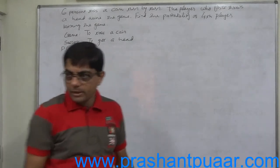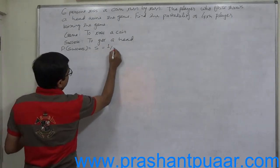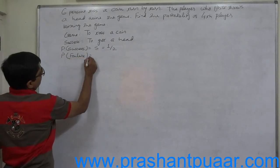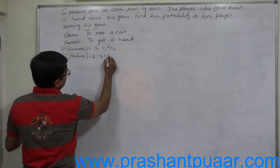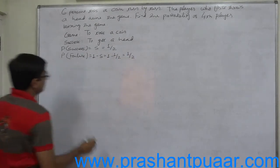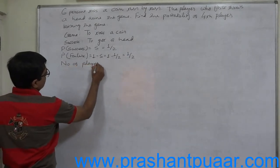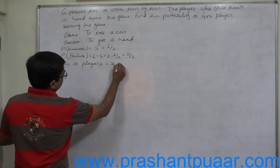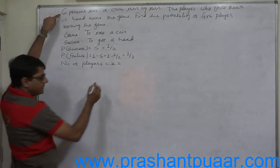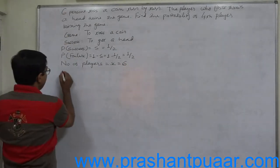In case of a single coin, the probability of a head is 1/2. What is the probability of failure? It is 1 minus the probability of success, which is 1 minus 1/2, that means 1/2. The number of players equals 6, since six persons toss a coin turn by turn.